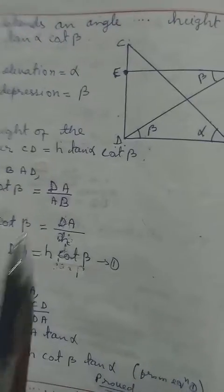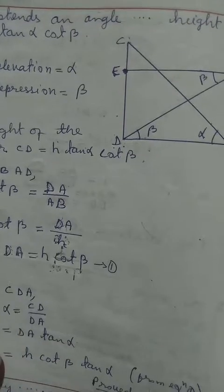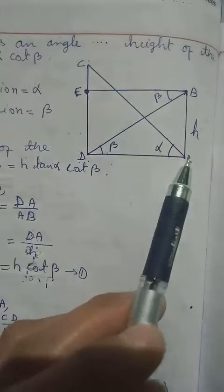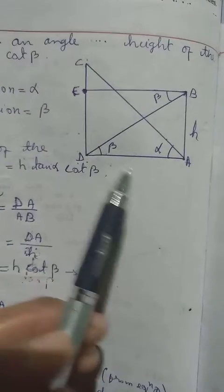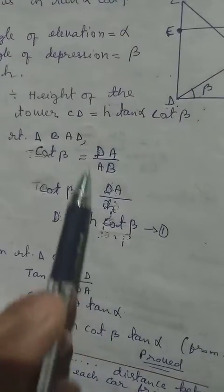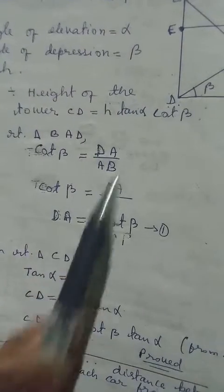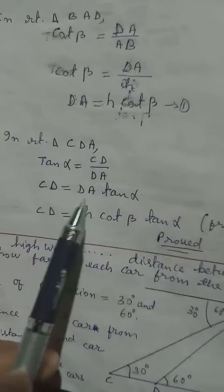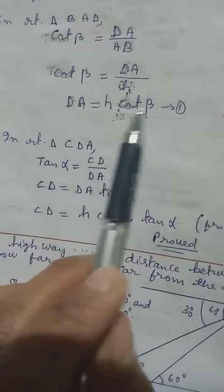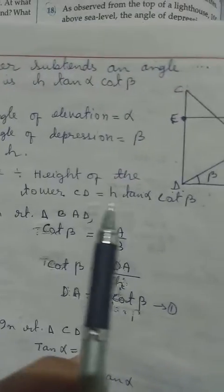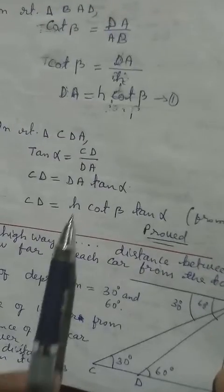Cot beta is base over perpendicular. In triangle BAD: cot beta = DA/AB. AB is known as h. So cot beta = DA/h, and cross multiplying: DA = h·cot(beta). Substituting DA back: CD = DA·tan(alpha) = h·cot(beta)·tan(alpha). This proves the height of the tower equals h·tan(alpha)·cot(beta).